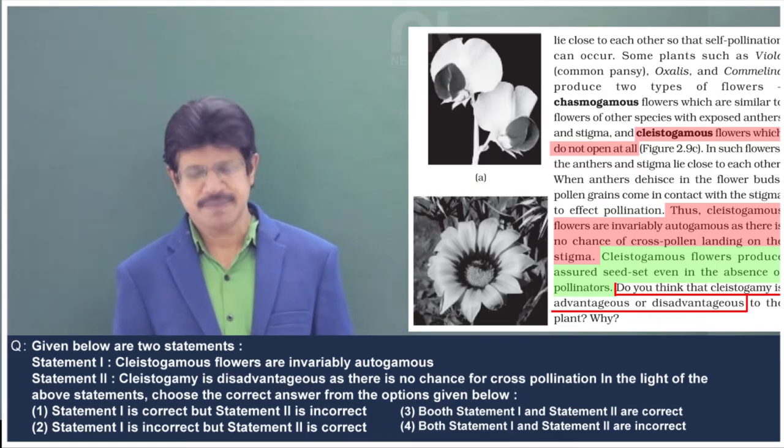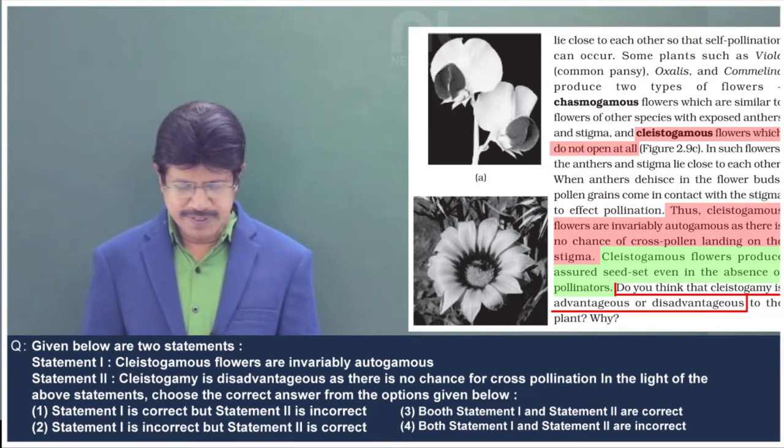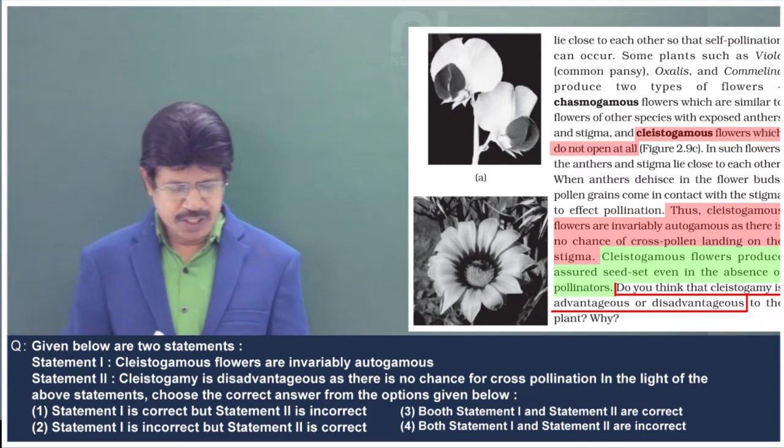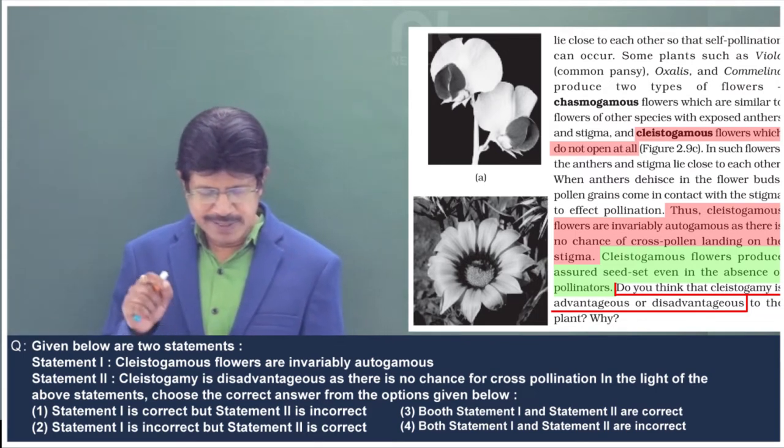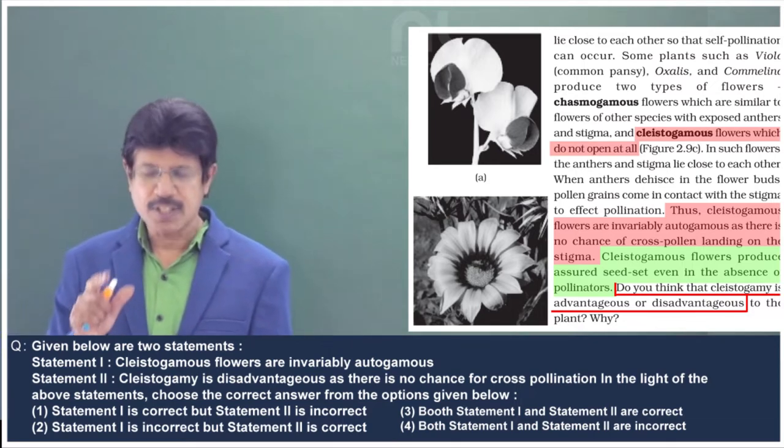Welcome to NEET Aspirants. The question is: Cleistogamous flowers are invariably autogamous in statement 1. In statement 2, cleistogamy is disadvantageous as there is no chance for cross-pollination.